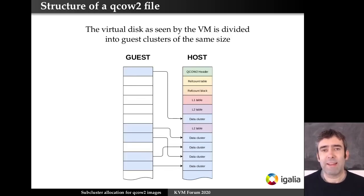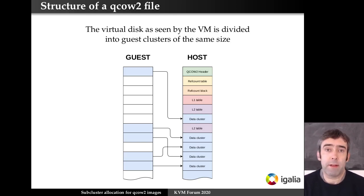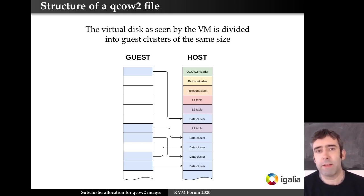Every time the guest needs to read data, it goes to the QCow2 file. If the cluster has been allocated there, then it just reads the data for the cluster. But if the cluster hasn't been allocated, then it contains zeros. Or if there's a backing file, it goes to the backing file and checks the data is there.